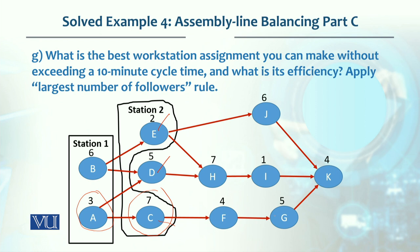Now D is available with 3 followers, F has 2 followers, and J is also available with 1 follower since E is assigned. So we assign D first. After D is assigned, H also becomes available. But assigning H would make 12 minutes, while assigning F keeps it at 9 minutes. So workstation 3 gets D and F.